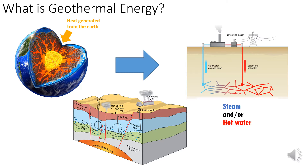The production wells are dug until the permeable rock layer right before the water flow, and then water or steam is usually pumped to be used in the plant, either for heat or electricity generation.